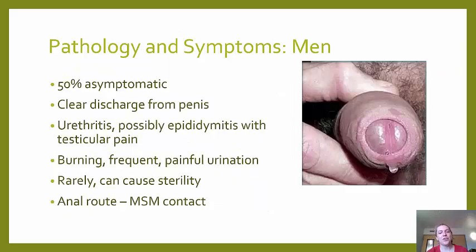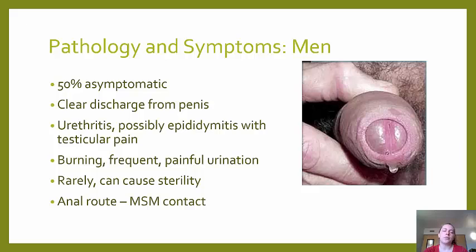In men, 50% are asymptomatic, but if symptoms do occur they typically include clear discharge from the penis and pain with frequent urination. Chlamydia can cause urethritis and possibly epididymitis, and rarely can cause sterility. Another route of infection is anal, which is more prevalent in men due to MSM (men having sex with men) contact.